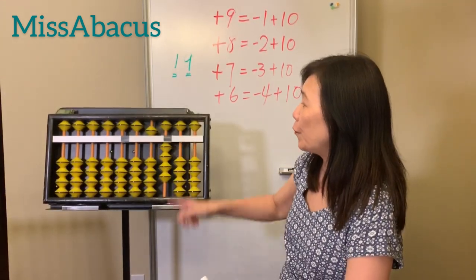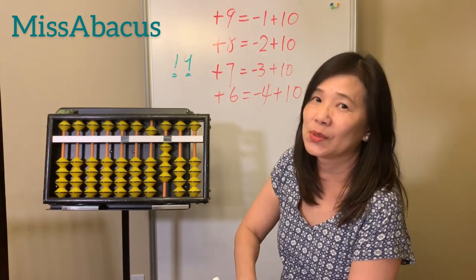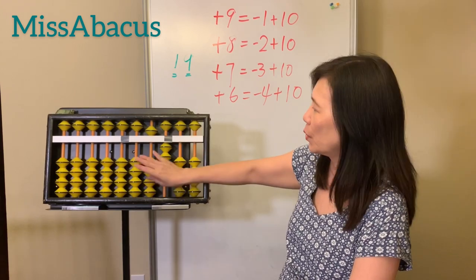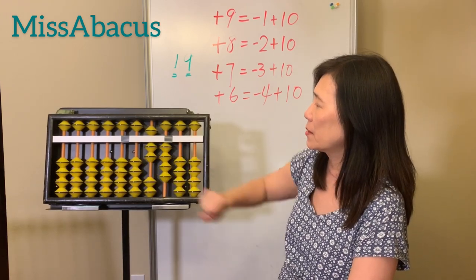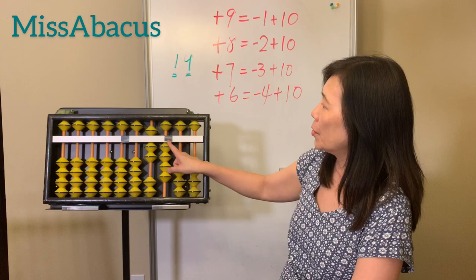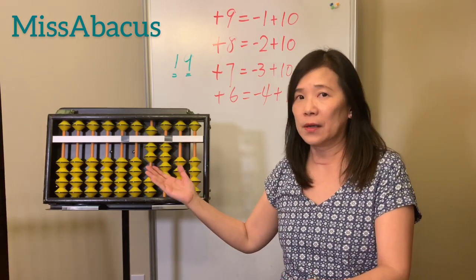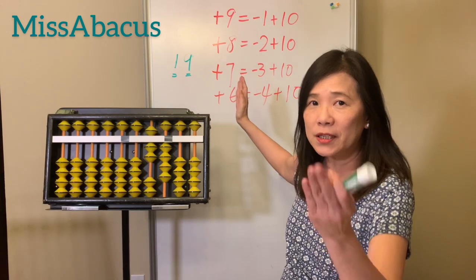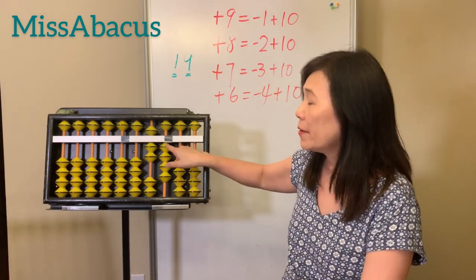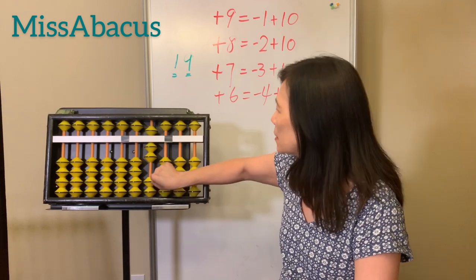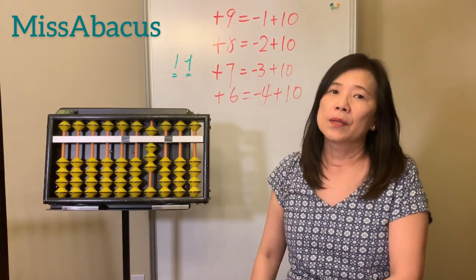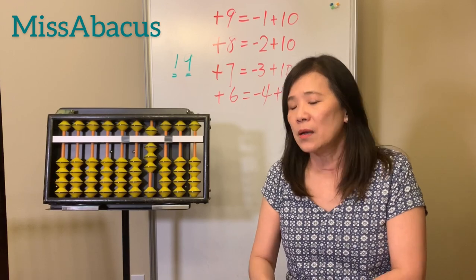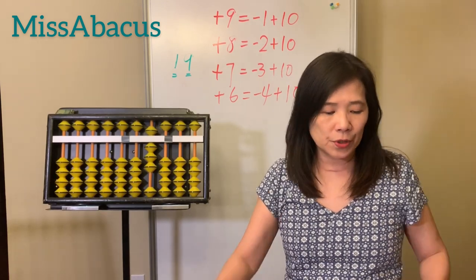Let's do 54 plus 26. First, two bits on the tens place. For six — oh, you only have five left, not enough. Use the rule: the complement of six is four, so take away four, plus ten. The answer is 80. That's today's rule.